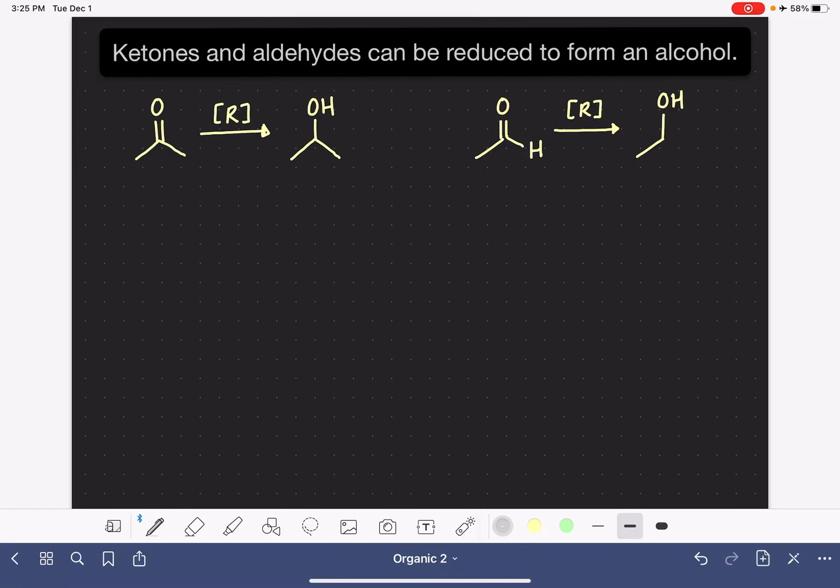Ketones and aldehydes can both be reduced to form an alcohol. This is an example of a ketone. A ketone is a molecule that has a carbon-oxygen double bond in between two carbon atoms.